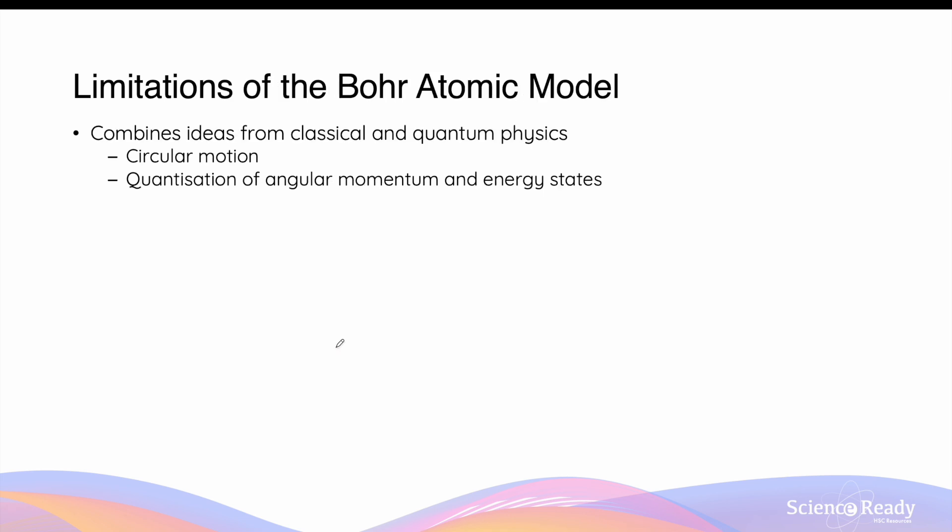The Bohr atomic model also has its limitations. Firstly, the Bohr atomic model combines ideas from both classical and quantum physics which do not reconcile. Circular motion of electrons in the stationary states is an example of a classical physics theory. The quantization of angular momentum and energy level of the stationary states are examples of quantum physics. Secondly, there is no fundamental reason for stationary states. Bohr does not explain why the circular motion of electrons do not produce electromagnetic radiation as predicted by Maxwell's electromagnetism theory. Maxwell's theory states that all charges when they undergo acceleration, including centripetal acceleration, should produce radiation. Bohr does not explain why this is not the case for orbiting electrons in an atom.